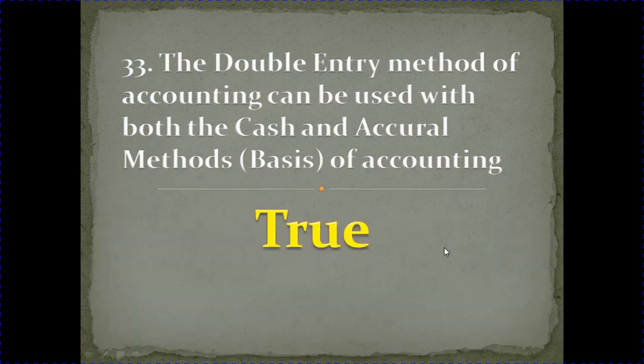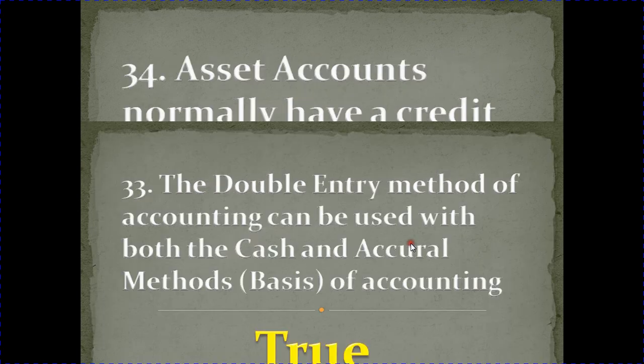The double entry method of accounting can be used with both the cash and accrual methods of accounting. Cash account maintenance is credit in the double entry system. Accrual system is also a double entry system method. So, this statement is also correct.